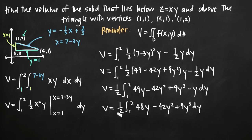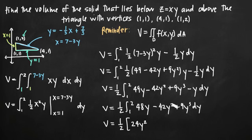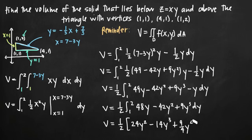Using the power rule to integrate, 48y becomes 24y squared, negative 42y squared becomes negative 14y cubed, and 9y cubed becomes nine-fourths y to the fourth. We evaluate this expression on the interval from y equals 1 to y equals 2.